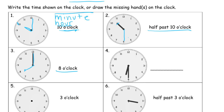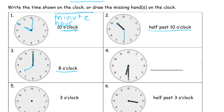Here we have a time where the hour hand is the short one, and it's halfway between the 6 and the 7, so it's after 6 o'clock. The minute hand is touching the 6, which means it's gone halfway around — starting from the 12, it's gone halfway around already, so it's half past what some people call the top of the hour. The minute hand points to the top of the clock at the beginning of the hour. So this is half past 6 o'clock.